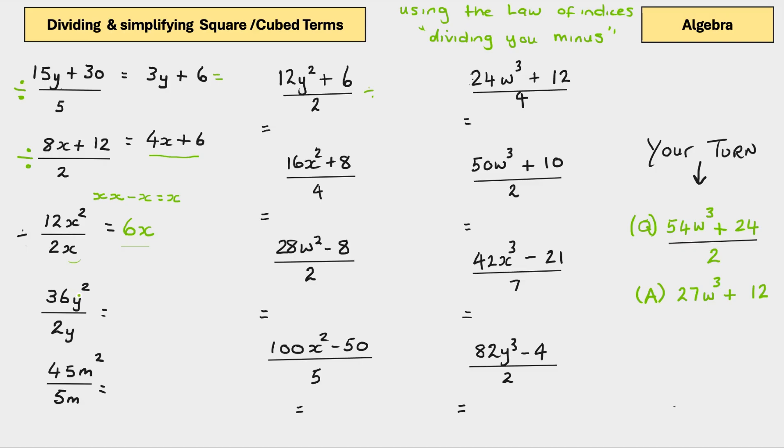Let's do another one. We've got 36y squared divided by 2y. It's a divide, so we're going to minus, and we've got a y there. So, we know whatever the answer is, it's only going to have 1y. So, 2 divided by 36 is 18. So, the answer is 18y.